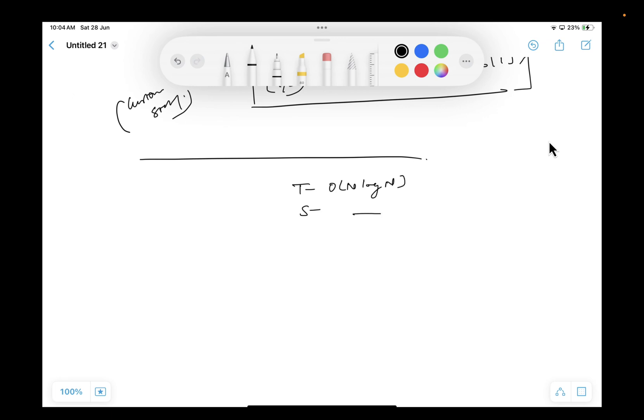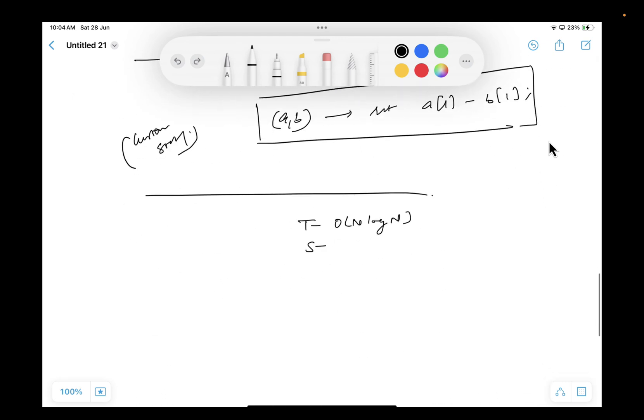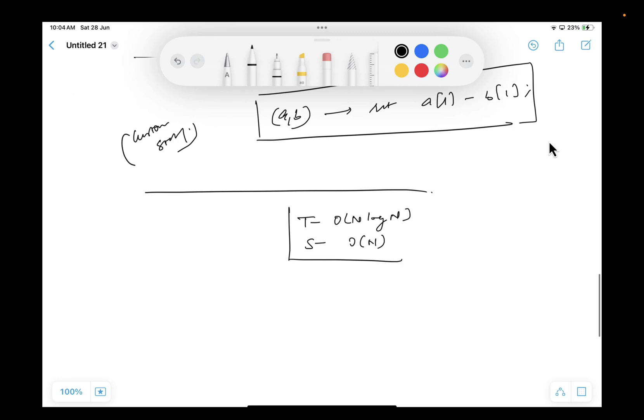And what about the space complexity? Whatever space complexity is also order of N in this case. Why? Because I am also making from array to 2D array with indices.